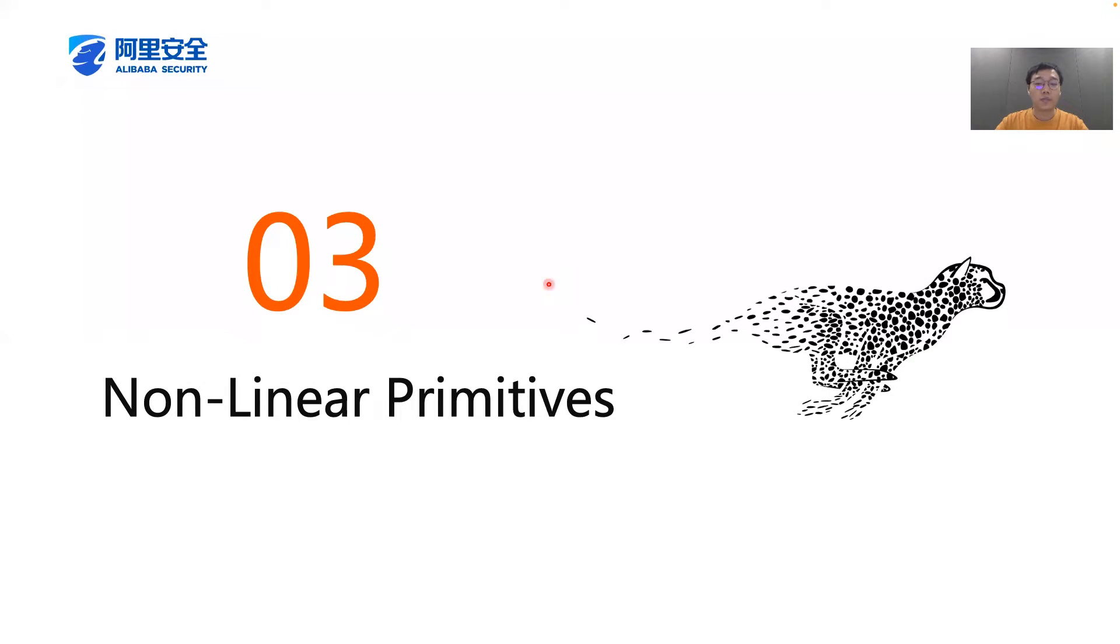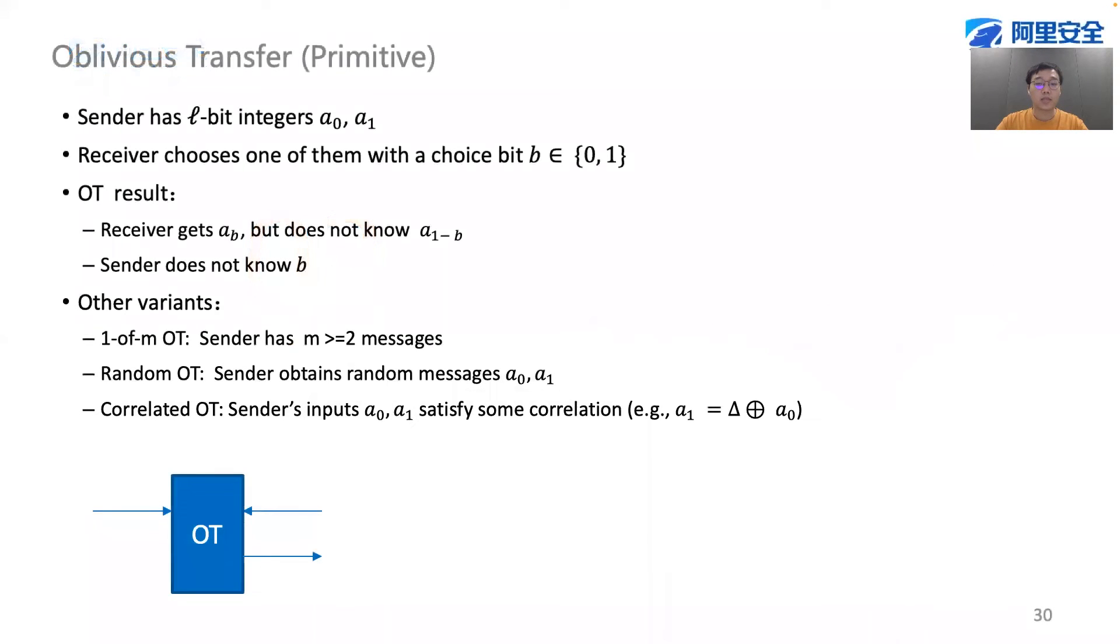For the nonlinear primitives, it relies heavily on oblivious transfer, where a sender has some messages that a receiver can choose from, but without revealing its choice.